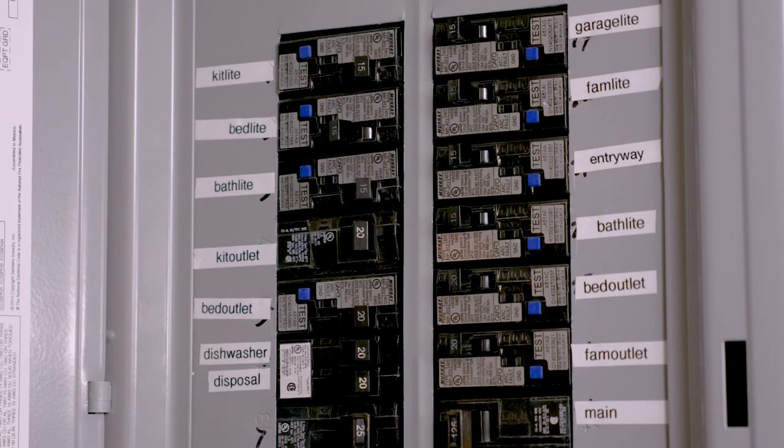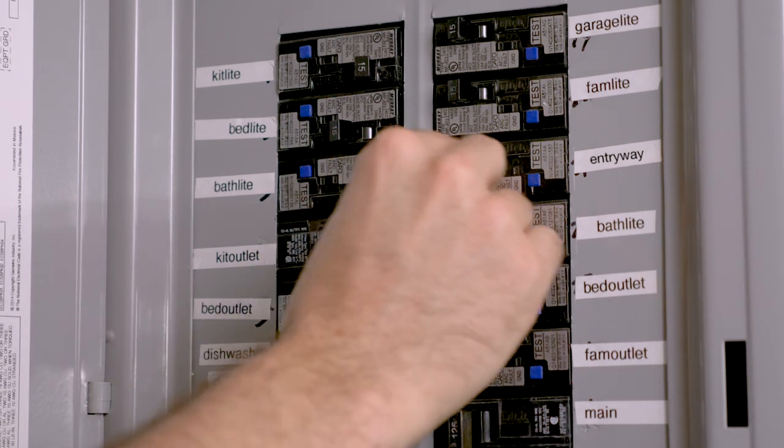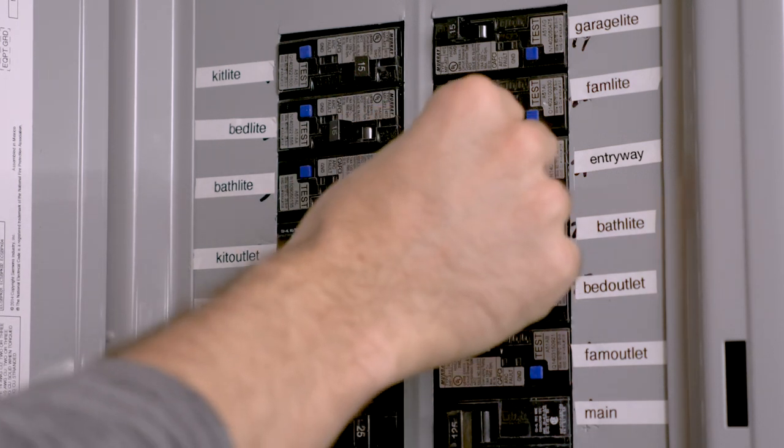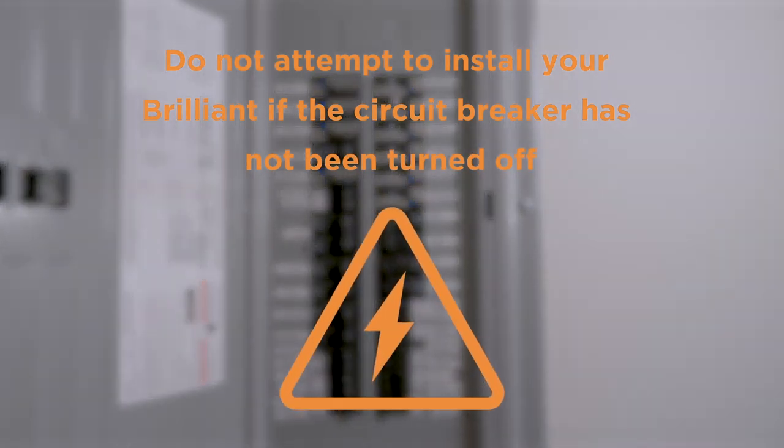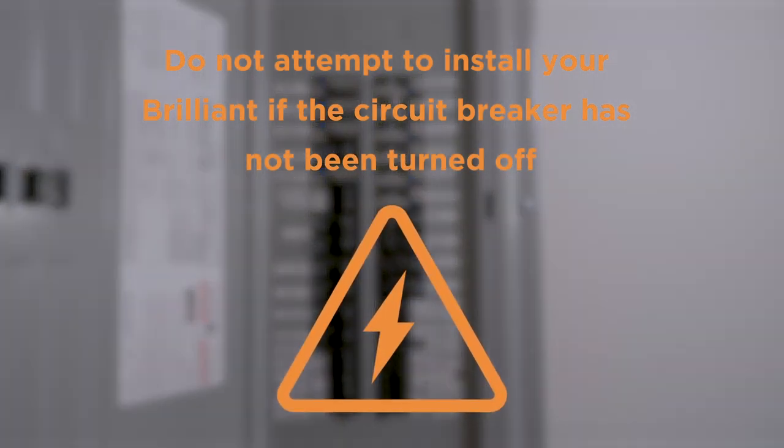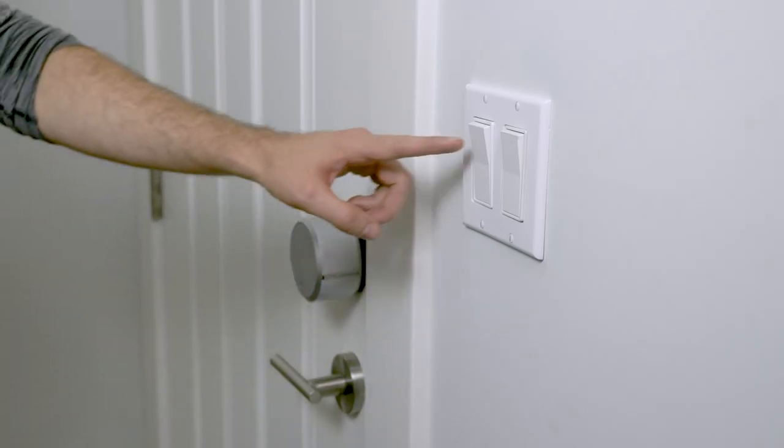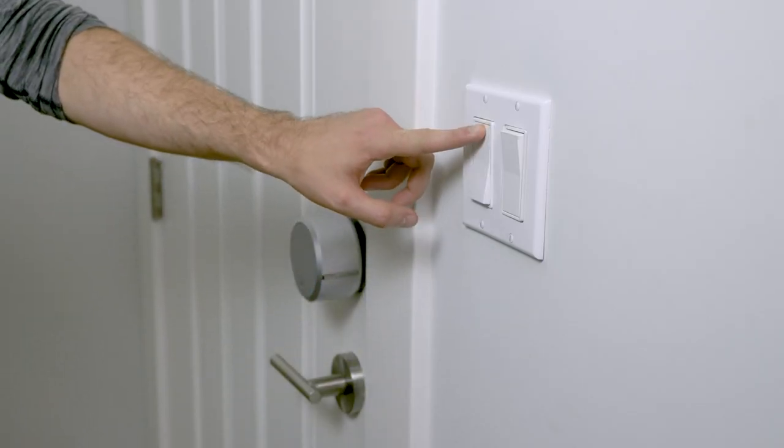First find your circuit breaker and make sure to identify the switch for the place that your light is located in and turn this off. Do not attempt to install your Brilliant if the circuit breaker has not been turned off. Before proceeding with removing your light switch and installing Brilliant, check that your light switch has no active power.